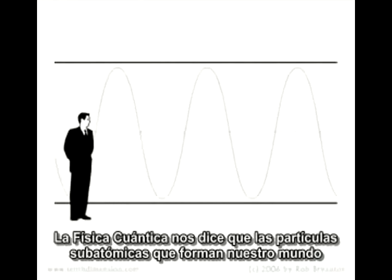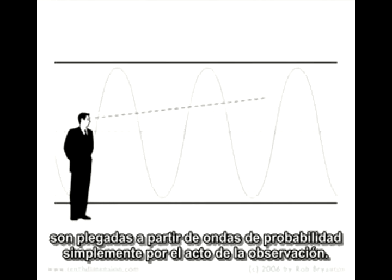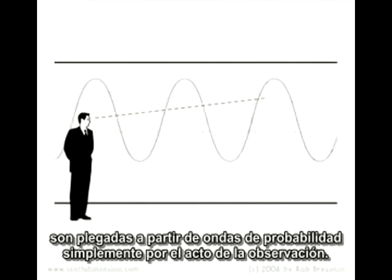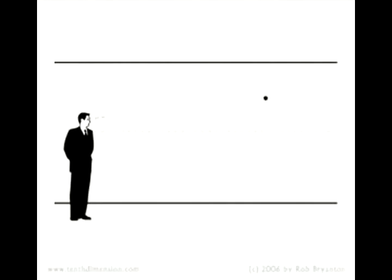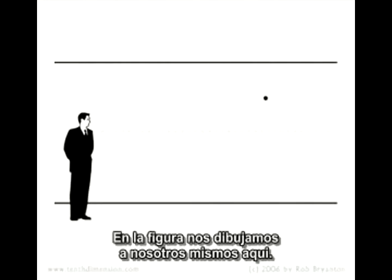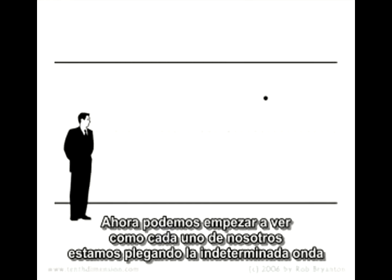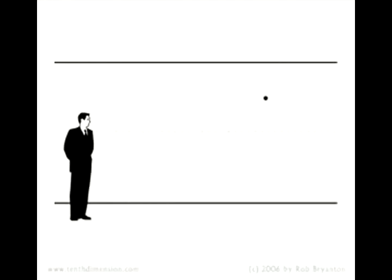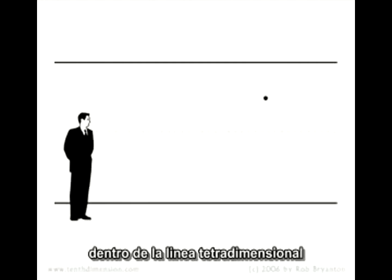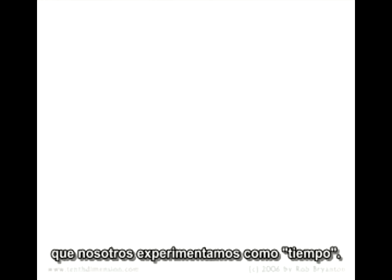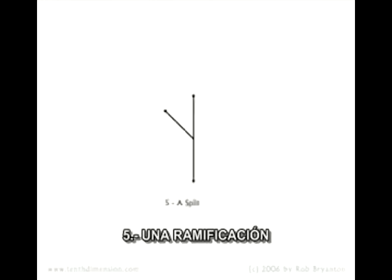Quantum physics tells us that the subatomic particles that make up our world are collapsed from waves of probability simply by the act of observation. In the picture we are drawing here, we can now start to see how each of us are collapsing the indeterminate wave of probable futures contained in the fifth dimension into the fourth-dimensional line that we are experiencing as time.